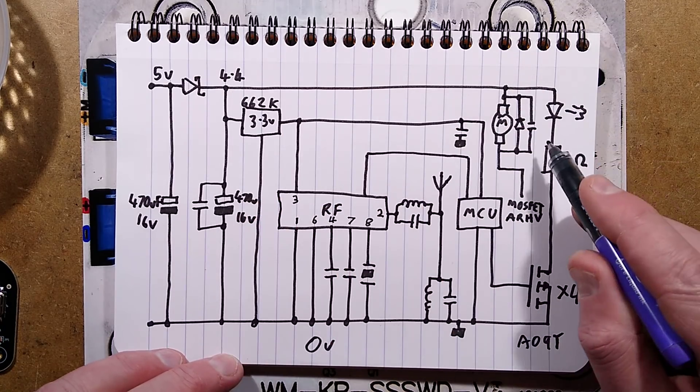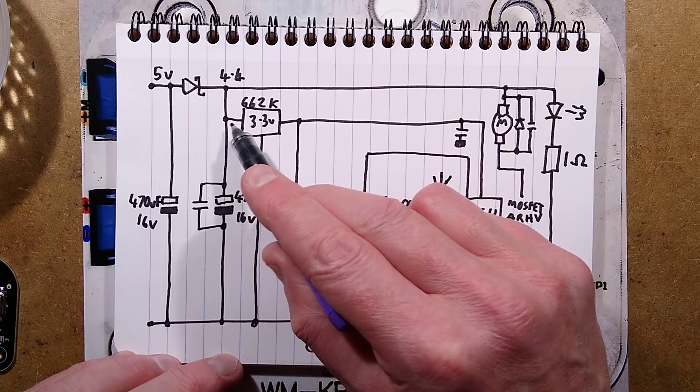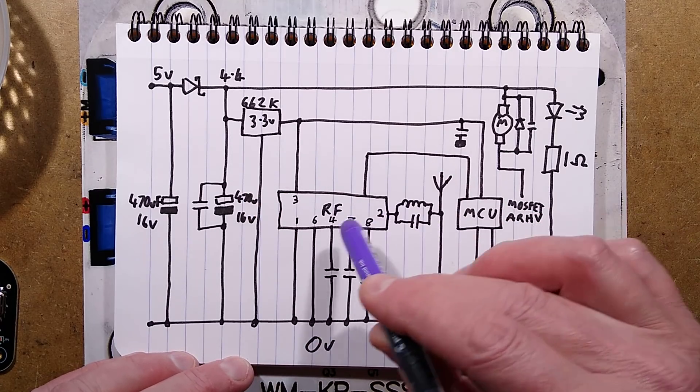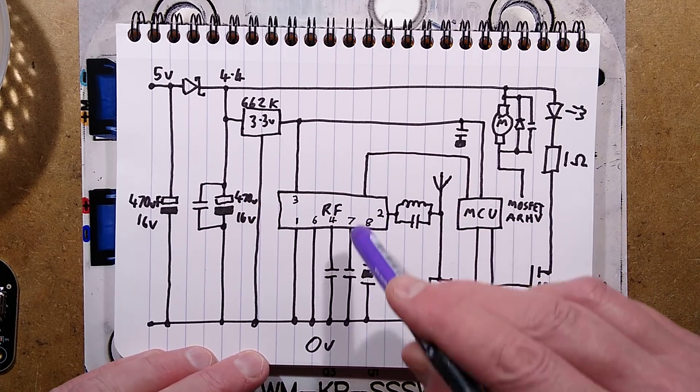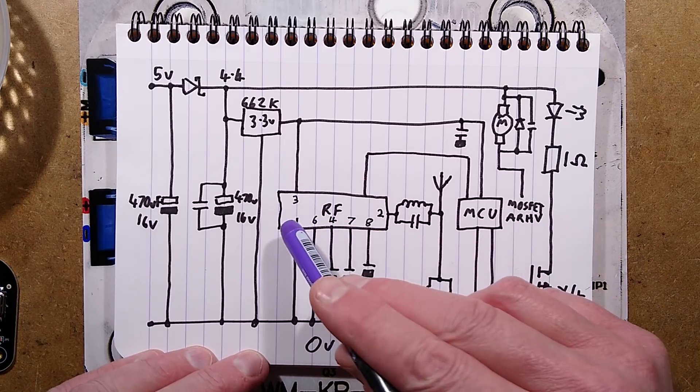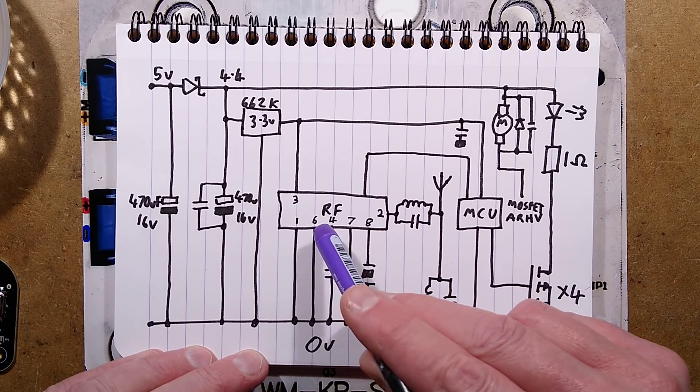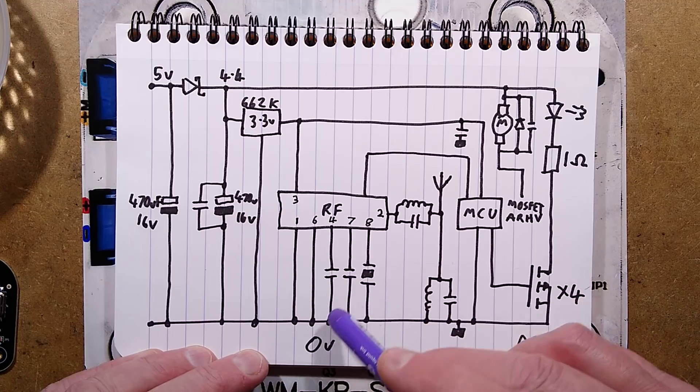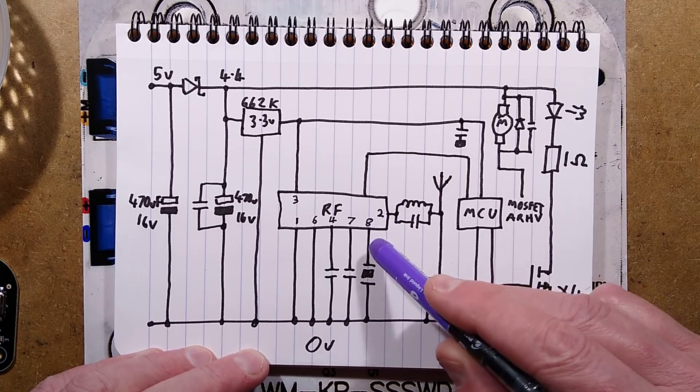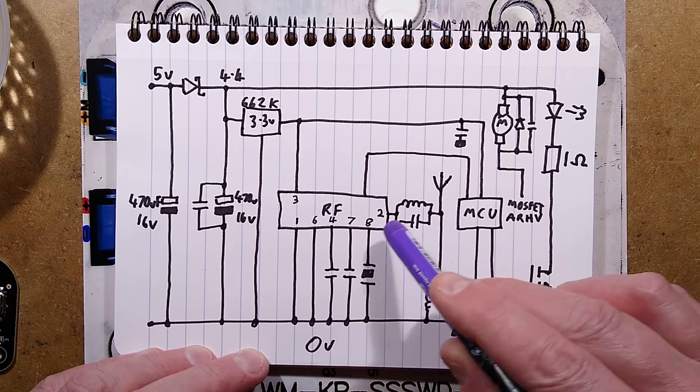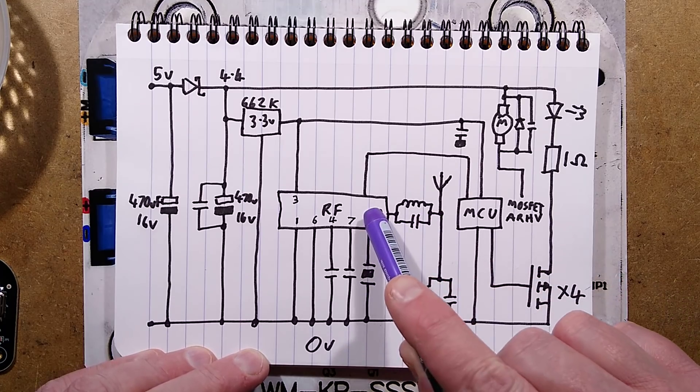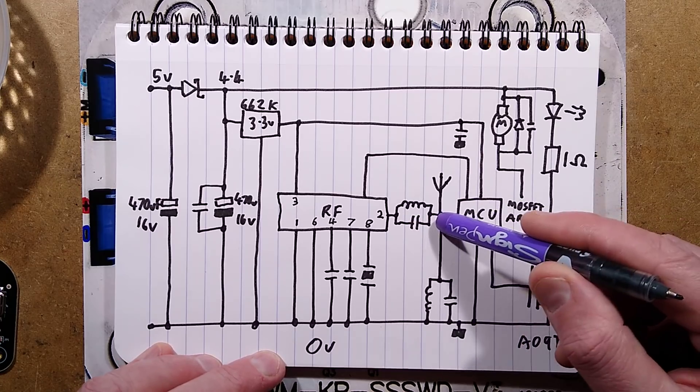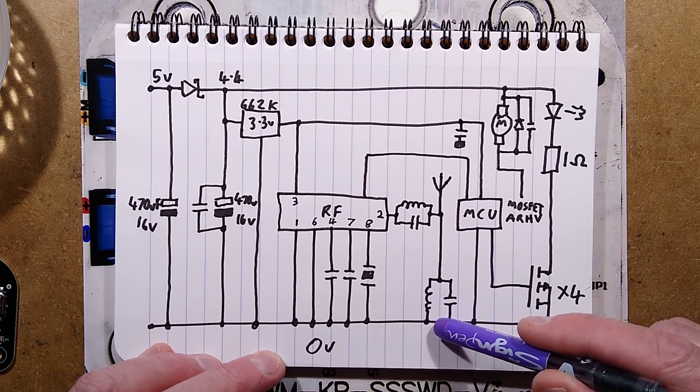That then feeds the LEDs and the motor and all the other stuff, but it also feeds the 3.3 volt regulator which goes to the RF circuitry. I have noted all the pin numbers down here. It's notable for 1 positive connection to pin 3, 2 negative connections to pins 1 and 6, 8 pin chip. 4 and 7 each have a capacitor to the 0 volt rail, 8 has the crystal to the 0 volt rail. Pin 2 is going through a parallel LC network to the antenna, and there's also another LC network to the 0 volt rail.